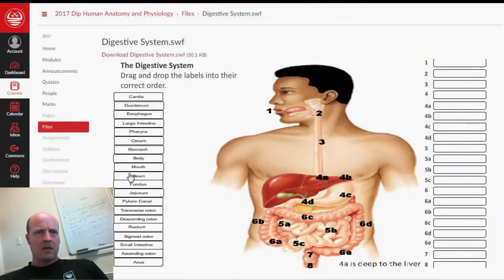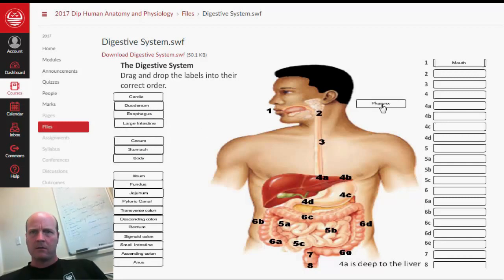So number one is our mouth. Food is ingested through the mouth, then it's going to go down through our pharynx before passing into our esophagus.